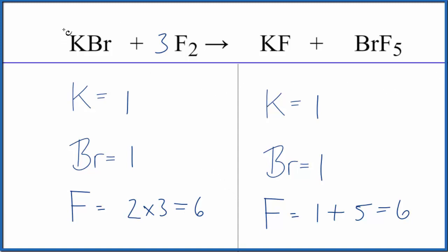If you need to report the coefficients for this equation, you would say one, three, one, one, although we don't write the one in front of these compounds here, it's assumed. This is Dr. B with the balanced equation for KBr plus F2, potassium bromide plus fluorine.